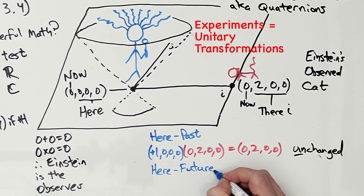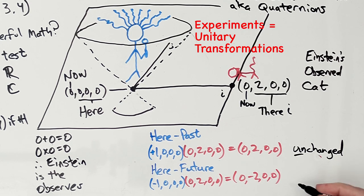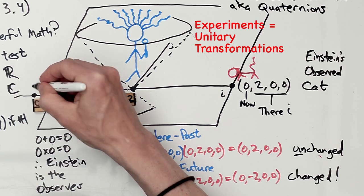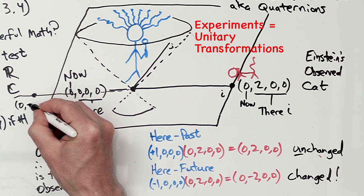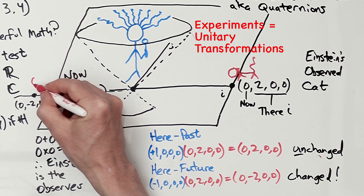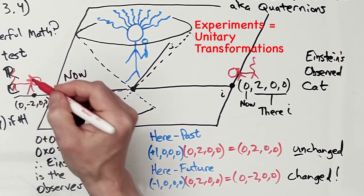Whereas the here future, I'm speculating, is (-1, 0, 0, 0) times the position of the cat (0, 2, 0, 0). And look at that. The cat has to move. And as a matter of fact, it's a precise transformation. We know exactly where that cat ends up due to the transformation. And it ends up on the other side there at (0, -2, 0, 0). And of course, we've got to draw the cat, because that's what got transformed.